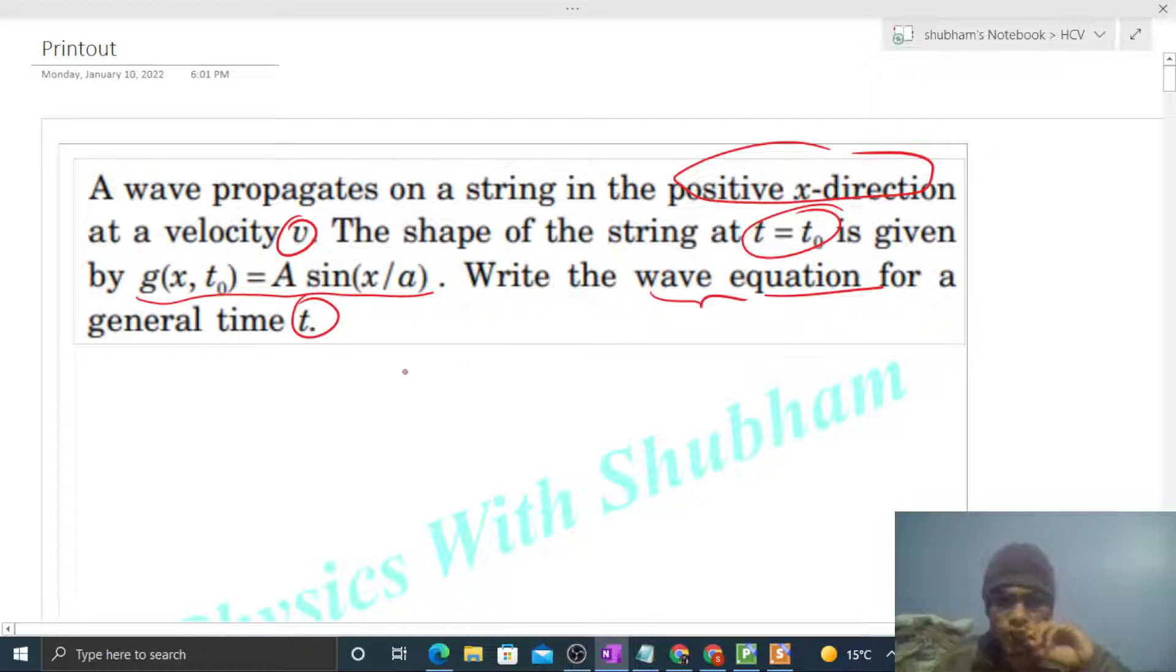So we have a wave equation. What is the standard form of the equation of the wave traveling along positive x direction? That is simply A sin(ωt - kx + φ).